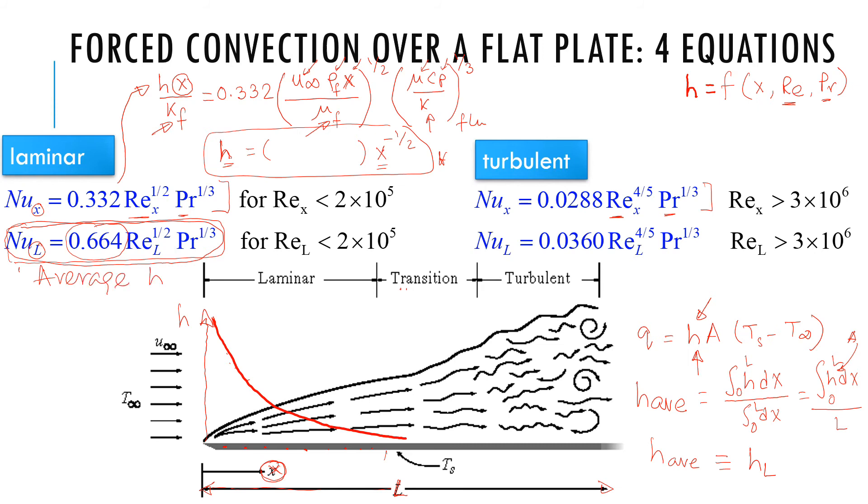So this is the one for average H. And this is the one that we would need to use in a situation like this. Otherwise, you have to get flux at every location and then add them up. So if this Q is Q_total, then this H has to be H average.